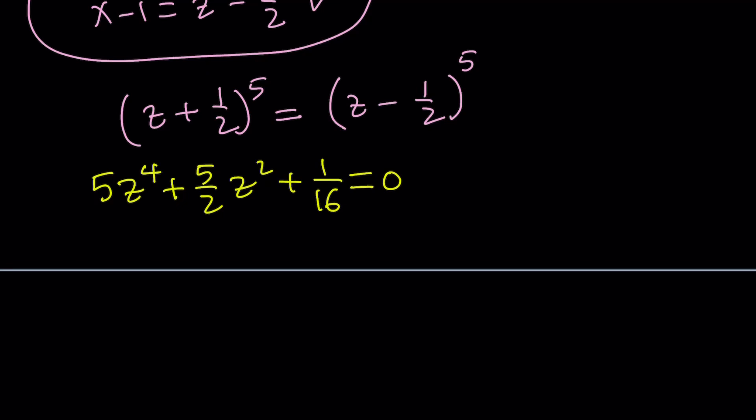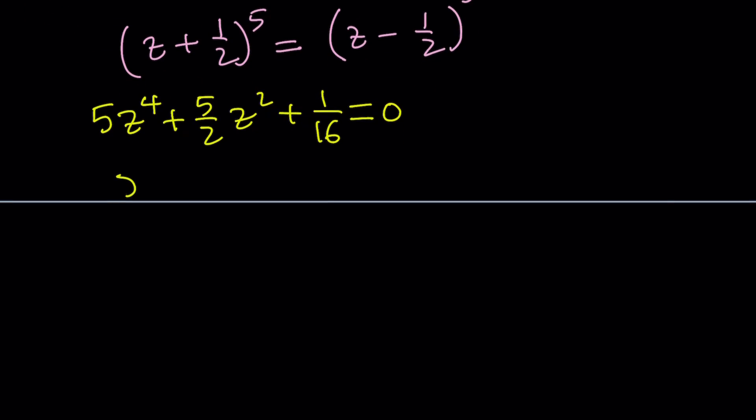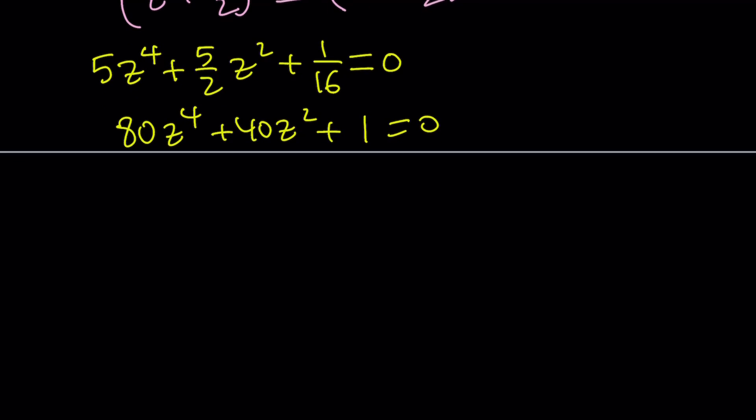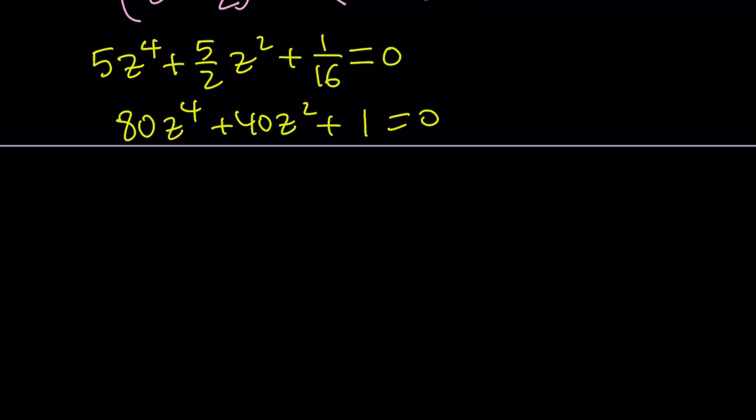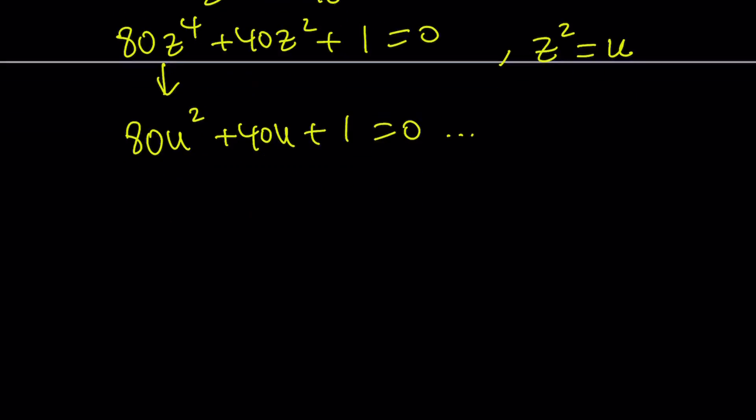I'll multiply both sides by 16 to get rid of all the fractions. That's going to give me 80 z to the fourth power plus 40 z squared plus 1 equals 0. So I call this a bi-quadratic because or bi-quartic, whatever. I think it's bi-quadratic because you can make a replacement here, another substitution. So you can go ahead and set z squared equal to u. And that's going to give you 80 u squared plus 40 u plus 1 equals 0.